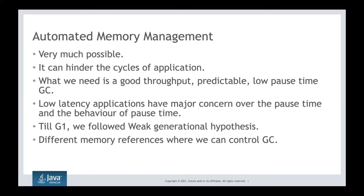I have seen many clients watching graphs continuously and saying 'Oh, the pause time has spiked up.' It will always happen that pause time can spike, but you need to define your SLA — 99th percentile, 99.9th percentile. You cannot claim 100th percentile. Some industries are fine with the 95th percentile, some go for 99th, and some go for 99.9th percentile.